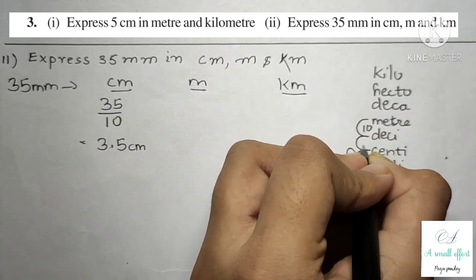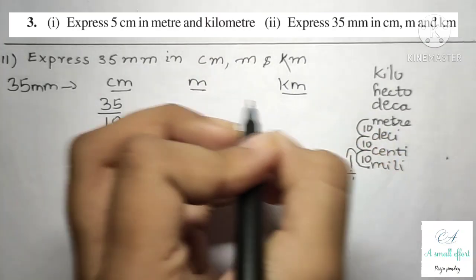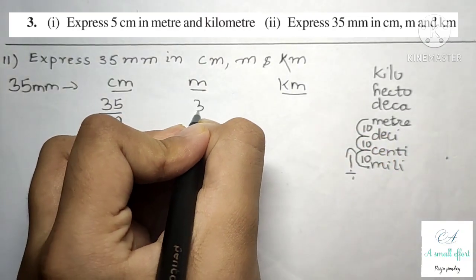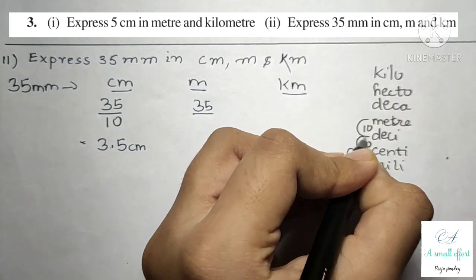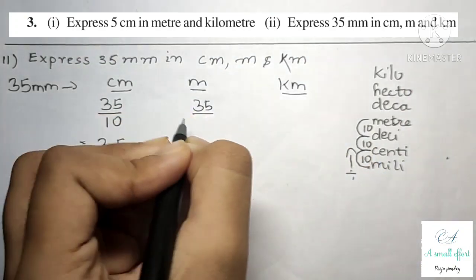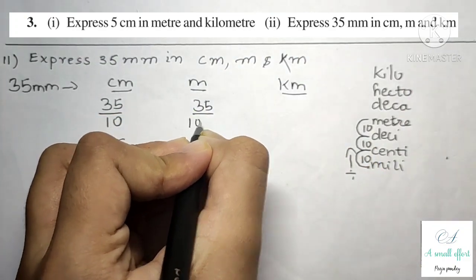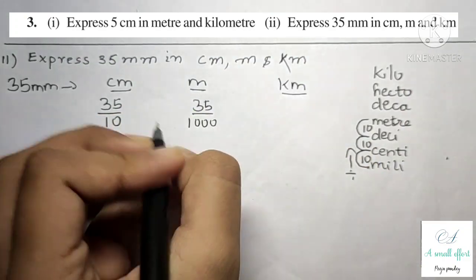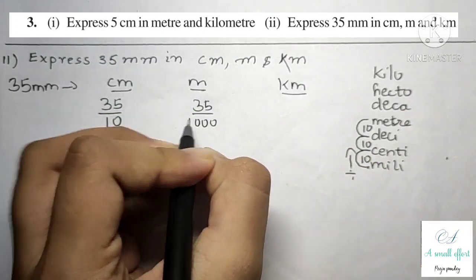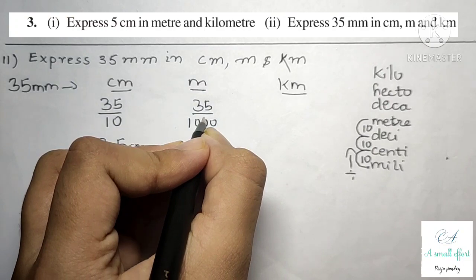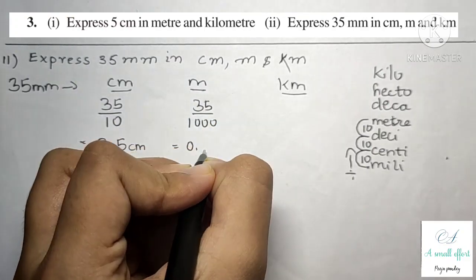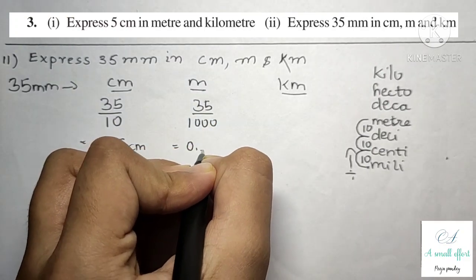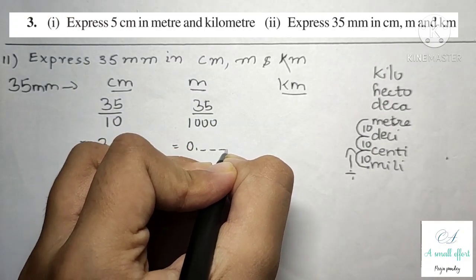Now 35 millimeter into meter. Millimeter to centimeter to decimeter to meter — that is three steps of 10, giving us 1000. So 35 divided by 1000. There are three zeros, so the decimal point is three digits from the last: we get 0.035 meter.